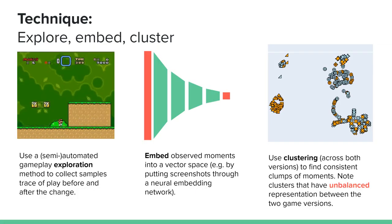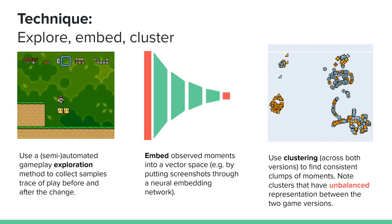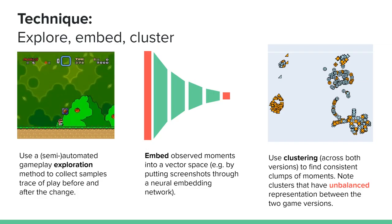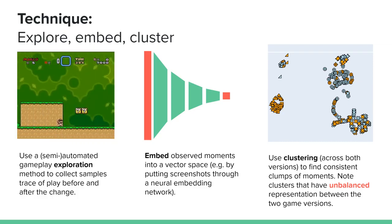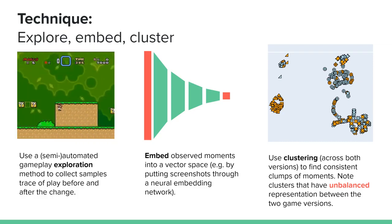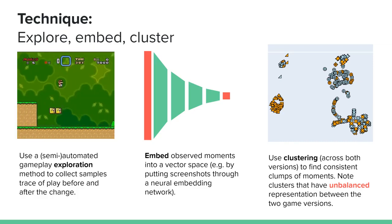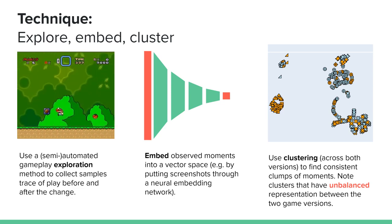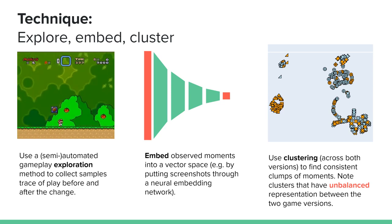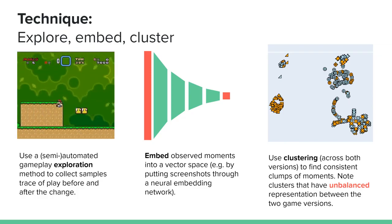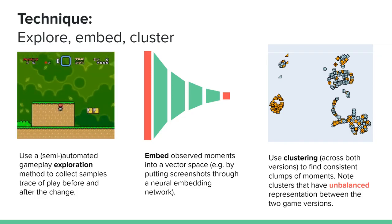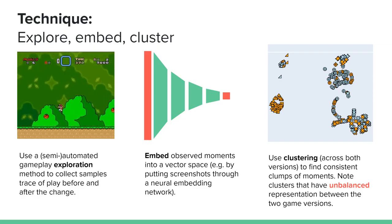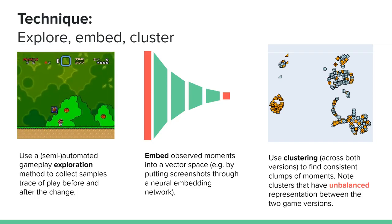The way we do something like this is to explore, embed, and cluster. We use a semi-automated gameplay exploration method to collect samples of gameplay before and after an incremental change. Then we embed these observed moments into a vector space, such as using screenshots and putting them into a neural embedding network. Then we cluster these vectors to find consistent clumps of moments, and these moments can be put onto a 2D map.